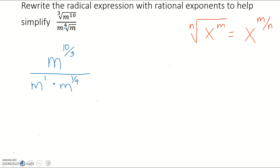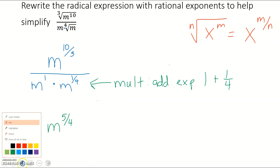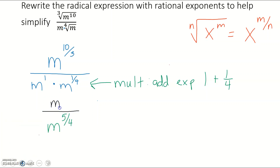Now to simplify this we're going to use all those different exponent rules. First, looking at our denominator — we're multiplying, and when you multiply you can add your exponents together. So we're going to add 1 plus 1/4. Make sure that when you do that addition you leave it as a fraction — do not turn it into a mixed number or a decimal. So that would be 5/4, giving us m to the 5/4 there. The numerator is still m to the 10/3 power.